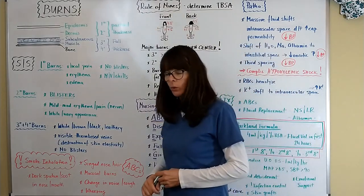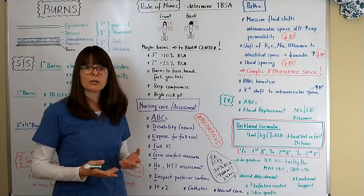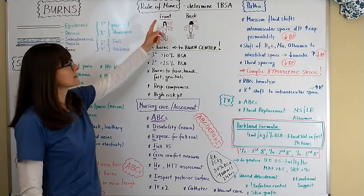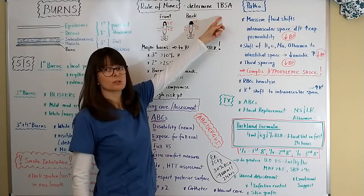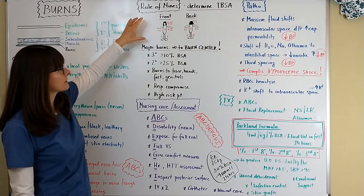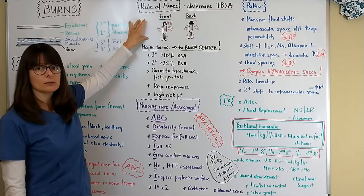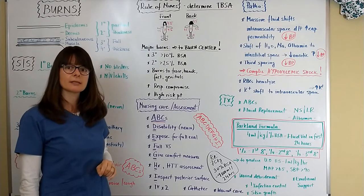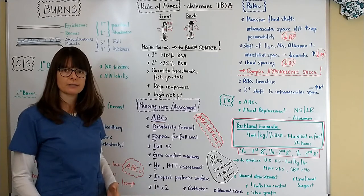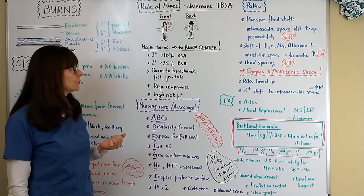Now for burns in order to assess the degree or the extent of the burn and treat the patient properly we have to figure out by the rule of nines their total body surface area affected. Keep in mind here this is a chart that's called the rule of nines and that applies for adults. In children the formula is a little bit different because children have different proportions of their body size depending on their age and that's usually the Lund-Browder chart that we use.